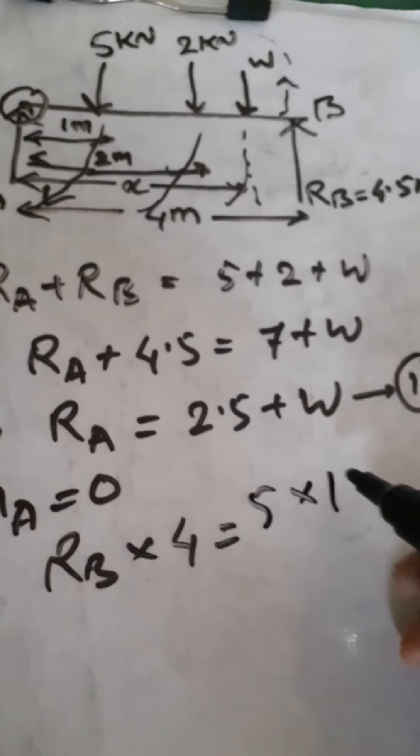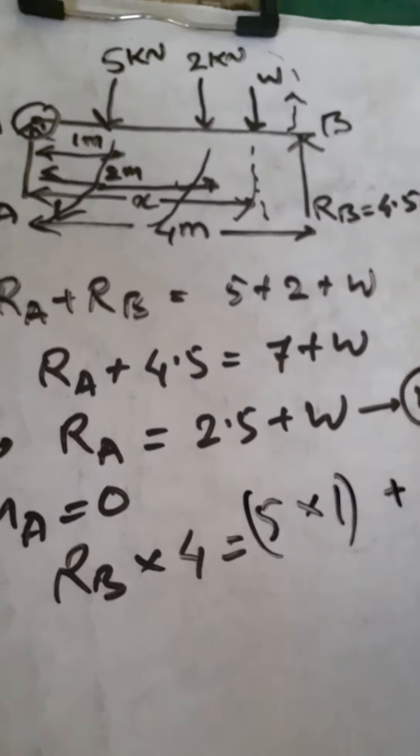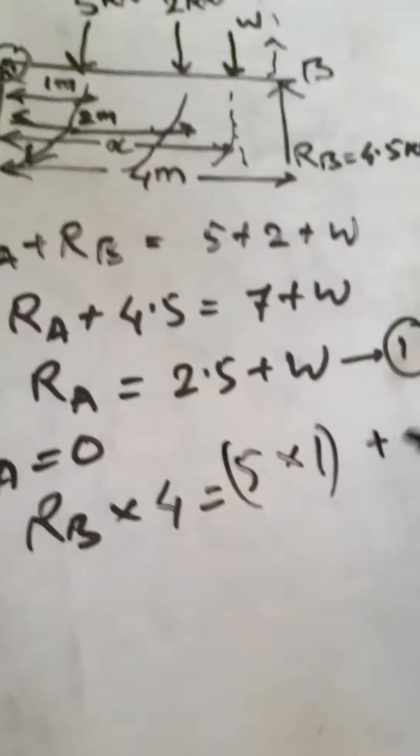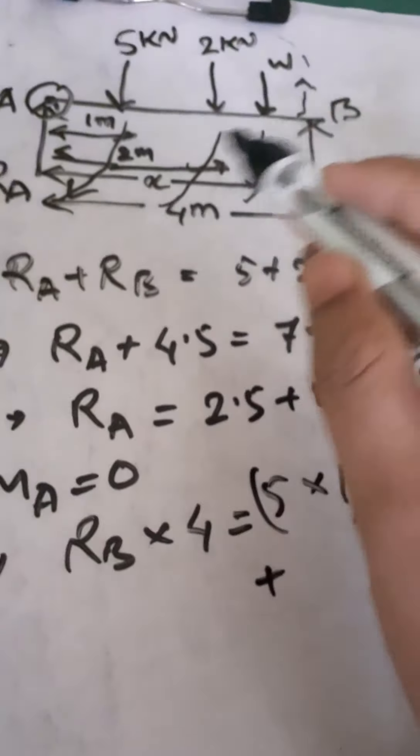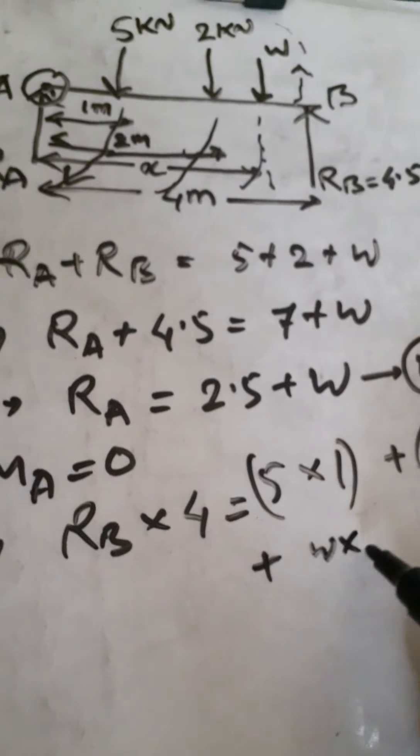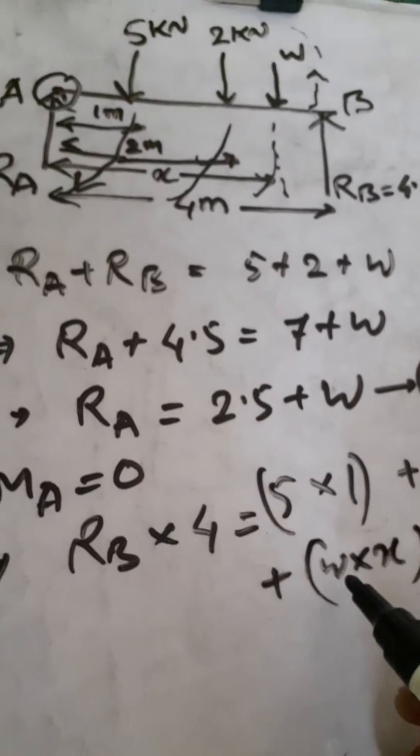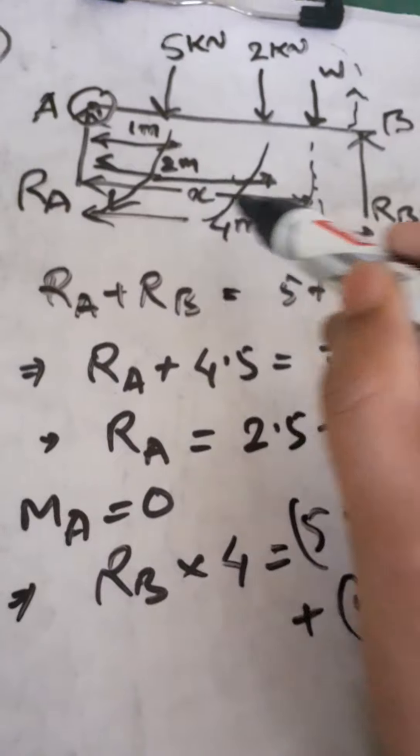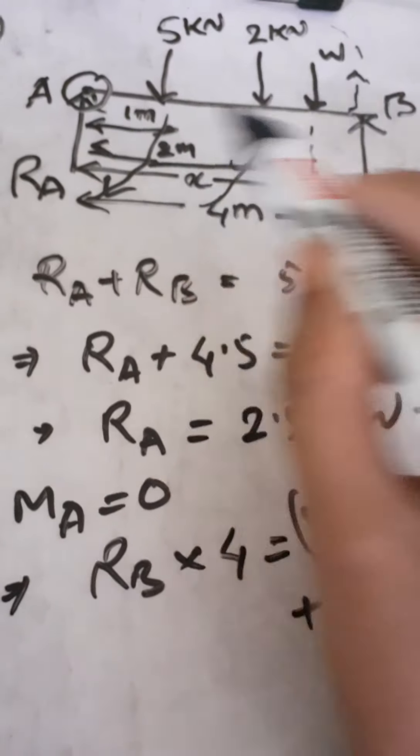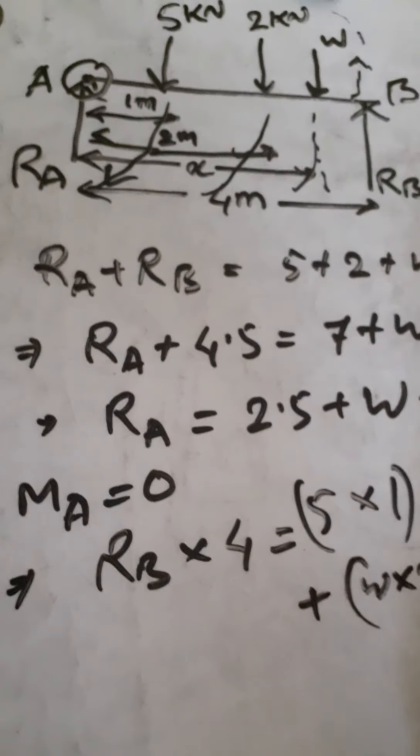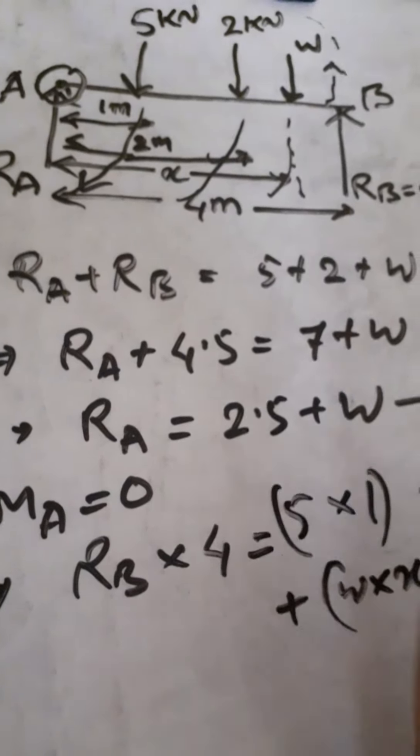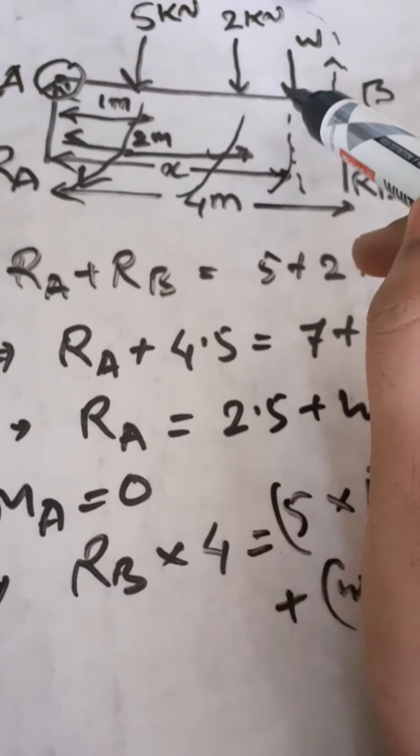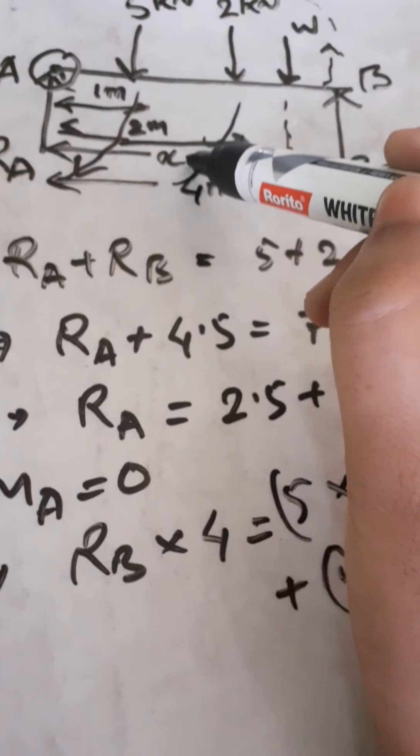RB into 4 equals 5 into 1 plus 2 into 2 plus W into x, where the load is at distance x from the end A. We need to find the distance of W from end A, so we consider this distance as x.